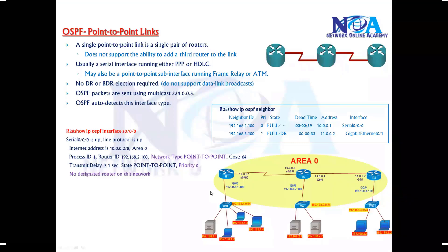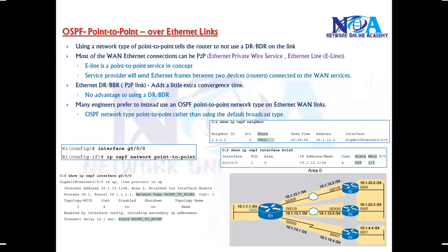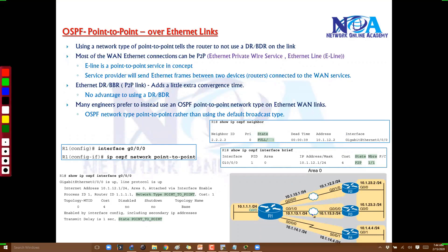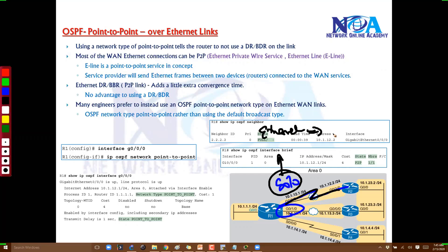On default serial interfaces there are no DR/BDR elections required — OSPF automatically detects the link and ensures no DR/BDR and no loops. However, there are scenarios where you may want to run point-to-point links over Ethernet. For example, with router 1 connecting on G0/0 and another router on G0/1 via Ethernet, OSPF automatically treats those as broadcast networks and will run DR/BDR elections.